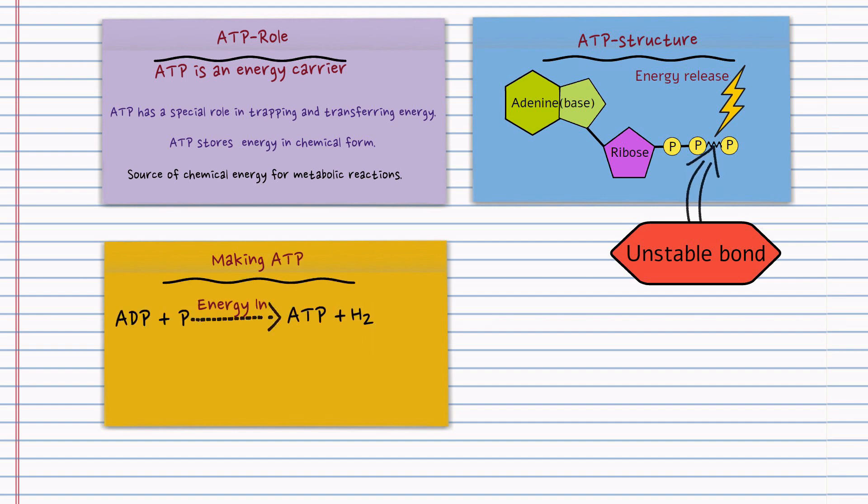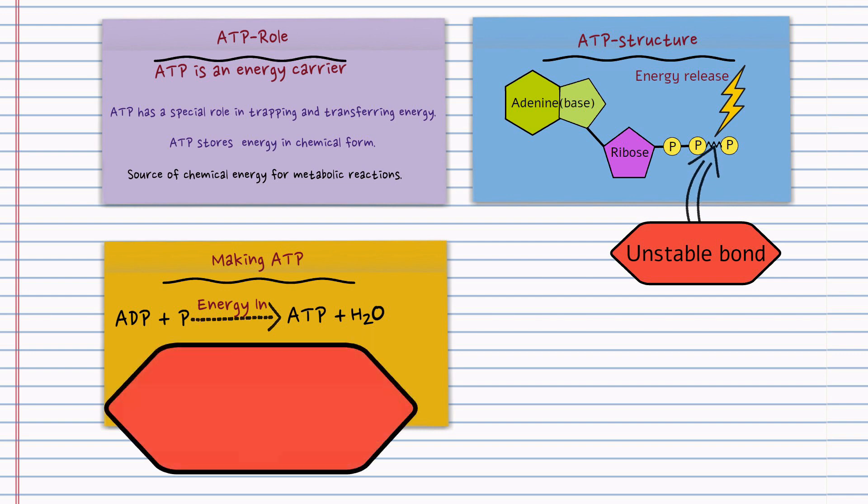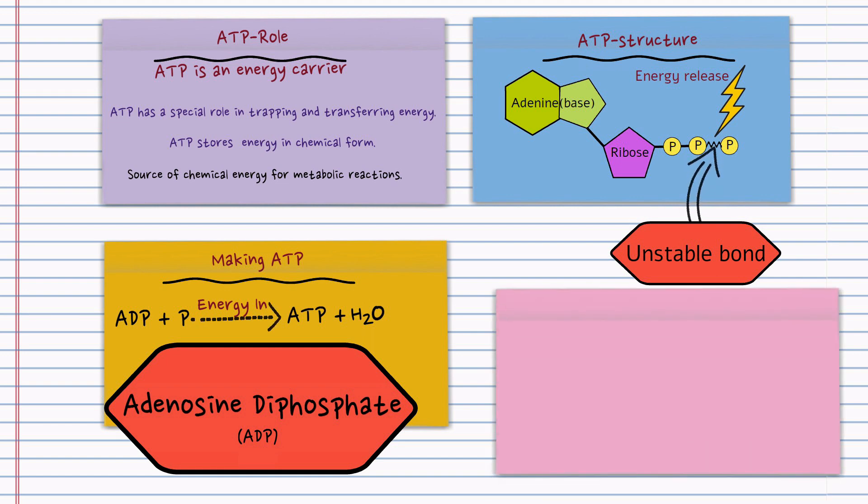This is so important and these two equations are essential. So when you're making ATP, you start with adenosine diphosphate and you're going to add that third phosphate on. But to do this, you have to input energy. And this results in the formation of an ATP molecule and water. So remember, adenosine diphosphate is ADP.